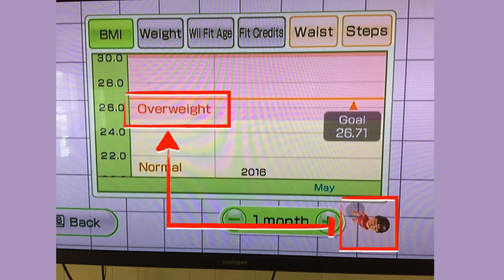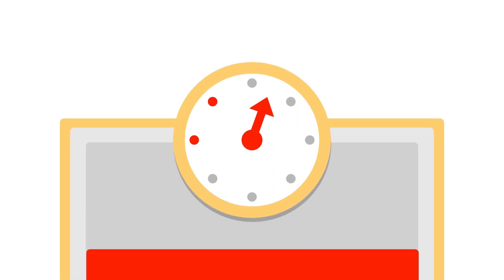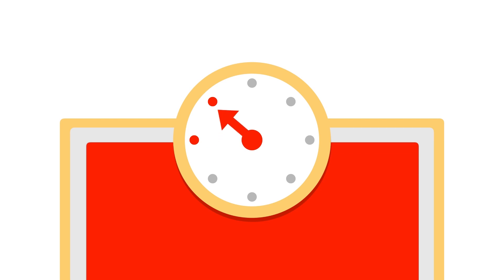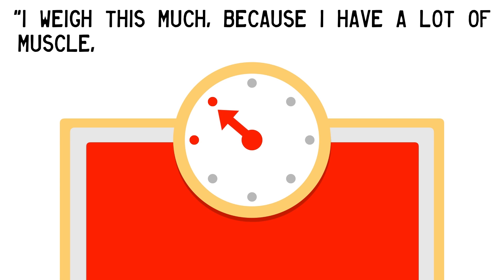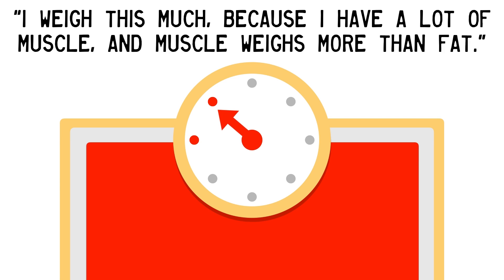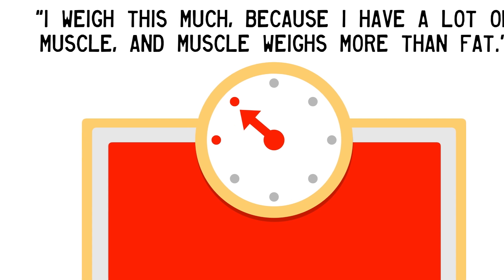This is why my Wii character says that I am overweight. But this question is commonly aroused when someone steps on to the scale and attempts to determine where the weight is coming from. We might hear: I weigh this much because I have a lot of muscle, and muscle weighs more than fat.